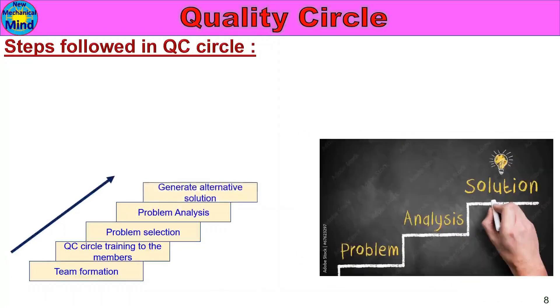Next is Generate Alternative Solutions. If there is an existing method or existing process, then that method is improved. If the problem is solved, the alternative solution is decided.